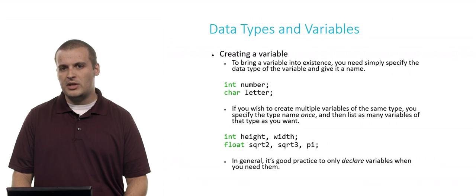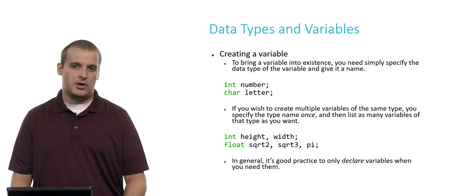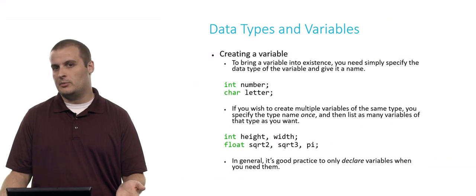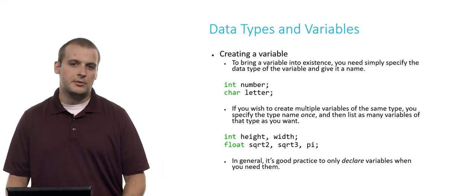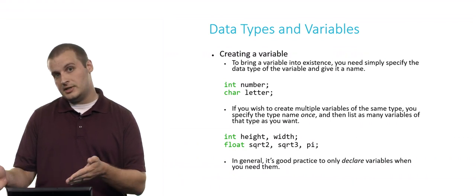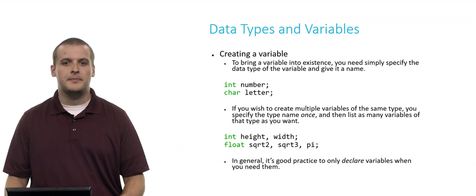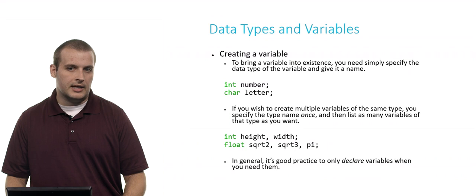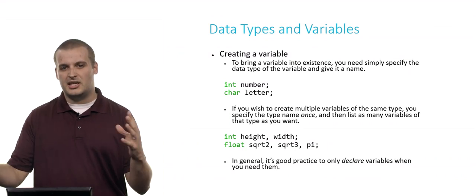Similarly here, I can create three floating point values at once. I can maybe create a variable called square root of 2, which presumably will eventually hold the floating point representation of the square root of 2, square root of 3, and pi. I could have done this on three separate lines, but again, I can just consolidate this into a single line of code. It makes things a little bit shorter, not as clunky. Now in general, it's good design to only declare a variable when you need it. You might just want to create a variable right when you need it.